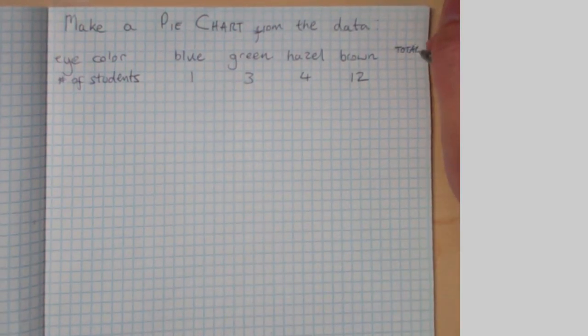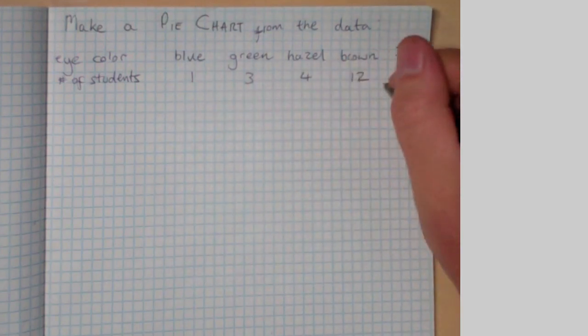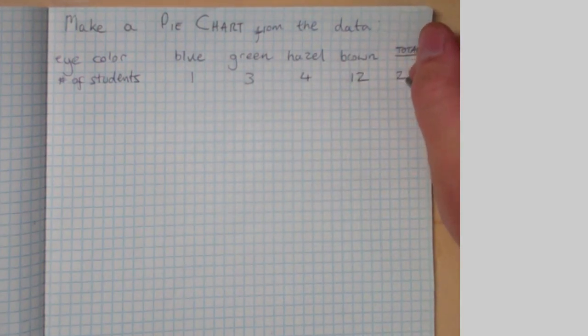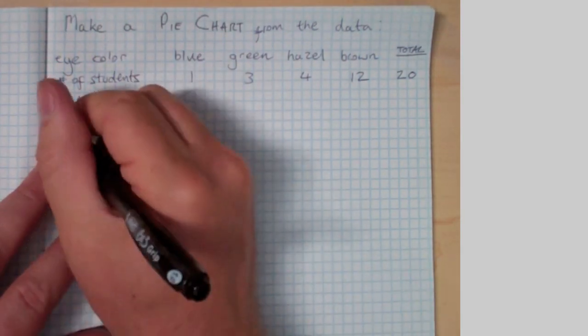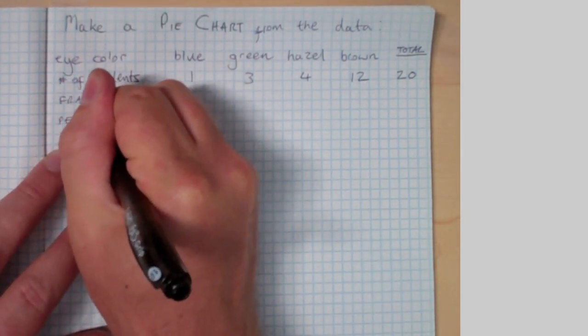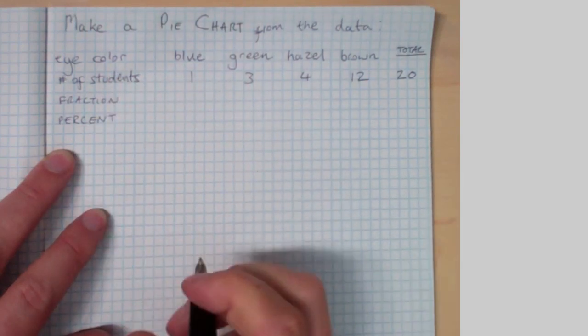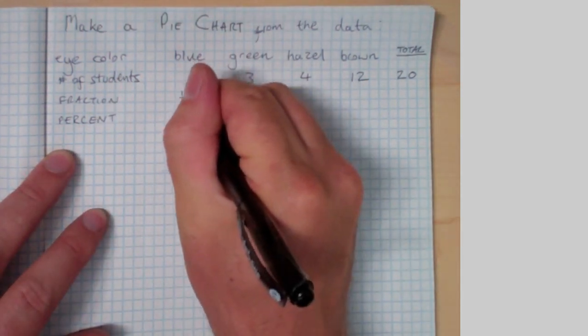So the first thing we're going to do is extend our table and put a little column in for the total. We find there's 20 students that we've surveyed. We can figure out the fraction of students that each color represents, percent, and ultimately we're going to figure out the angle that we're going to put on our pie chart.